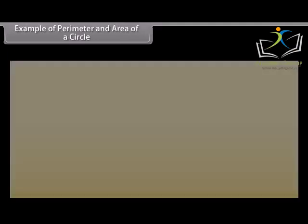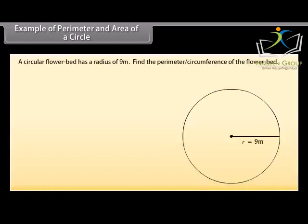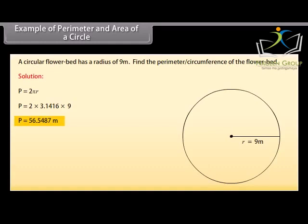Example 1: A circular flower bed has a radius of 9 meters. Find the perimeter or circumference of the flower bed. Solution: We know that perimeter P equals 2 pi r. Substituting the values, P equals 2 × 3.1416 × 9, which equals 56.5487 meters. So the circumference of the flower bed is 56.5487 meters.